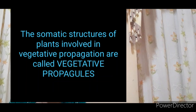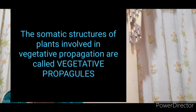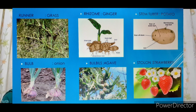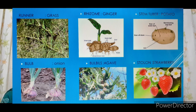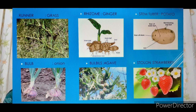The somatic structures of plants involved in vegetative propagation are called vegetative propagules. Some vegetative propagules with examples: runner — grass or oxalis; rhizome — ginger, turmeric, banana plant; sucker — chrysanthemum; tuber — potato; offset — water hyacinth; bulb — onion; bulbil — agave; adventitious buds — bryophyllum; stolon — strawberry; stem cutting — sugarcane, rose plant, etc.